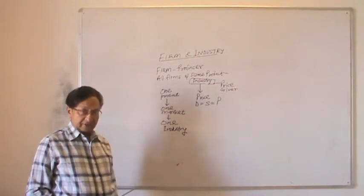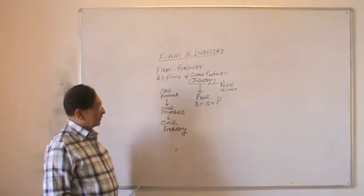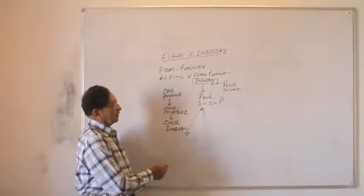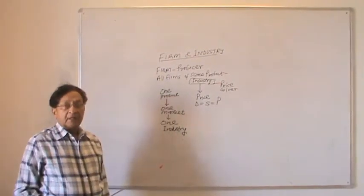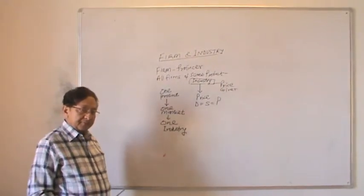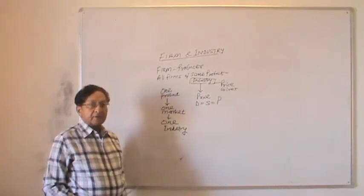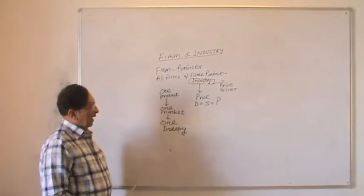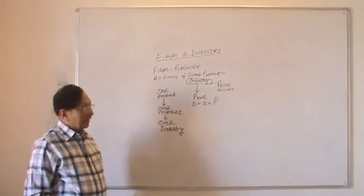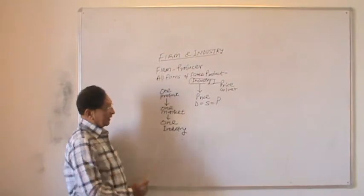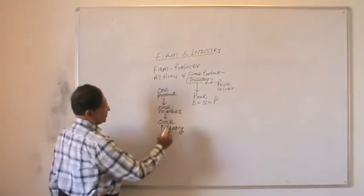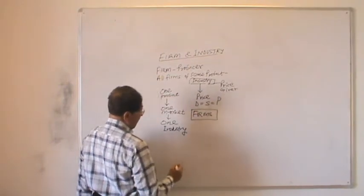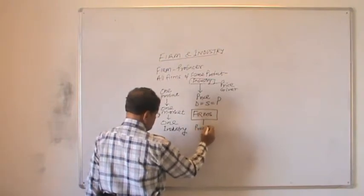All economic decisions regarding an industry or an economy are taken by demand and supply. In the long period, producers determine price depending on aggregate demand and supply. An industry gives the price on the basis of demand and supply, whereas firms have to accept the price given by the industry. So they are called price takers.